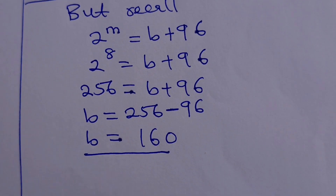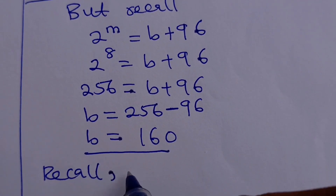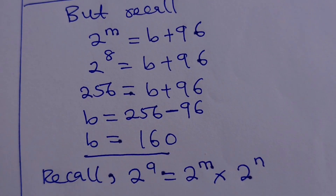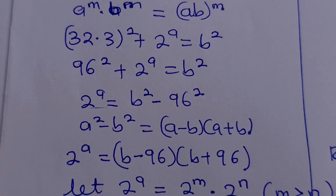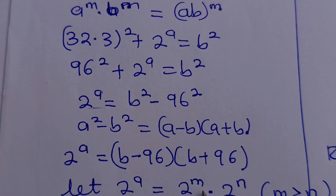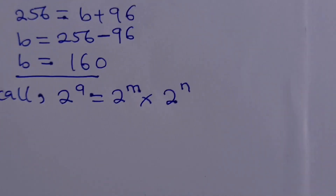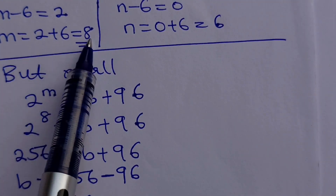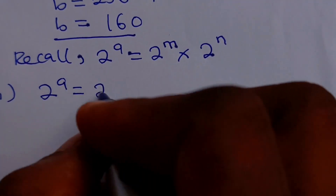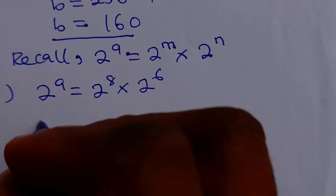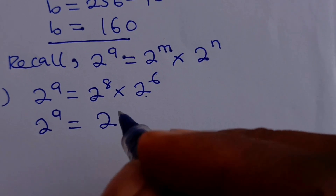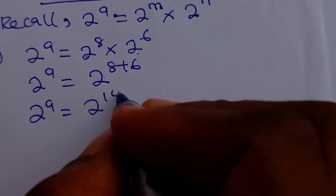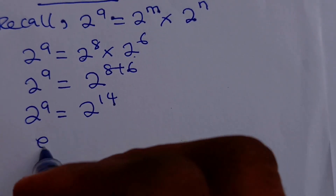To get the value of A, recall that 2 to the power of A equals 2 to the power of M multiplied by 2 to the power of N. Since M equals 8 and N equals 6, we have 2 to the power of A equals 2 to the power of 8 multiplied by 2 to the power of 6. Using the multiplication law, we add the powers: 8 plus 6. So 2 to the power of A equals 2 to the power of 14, and therefore A equals 14.